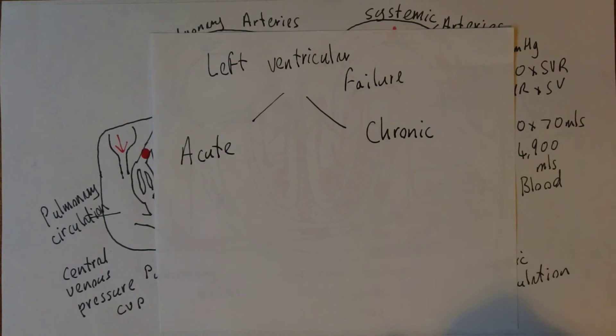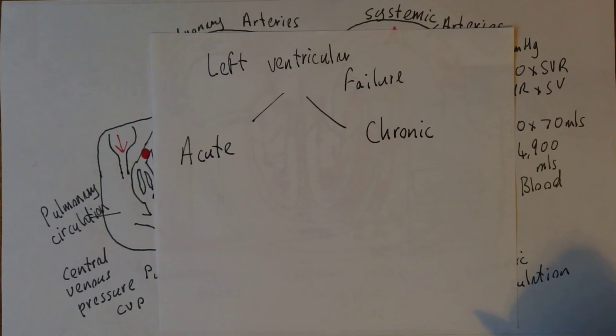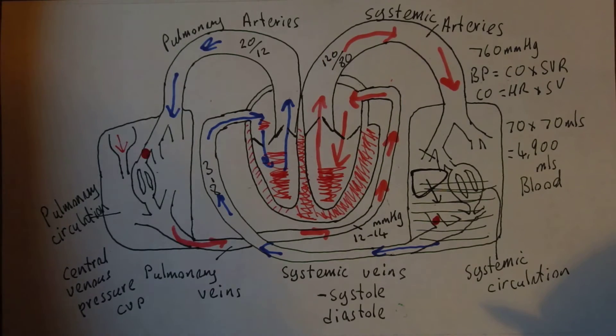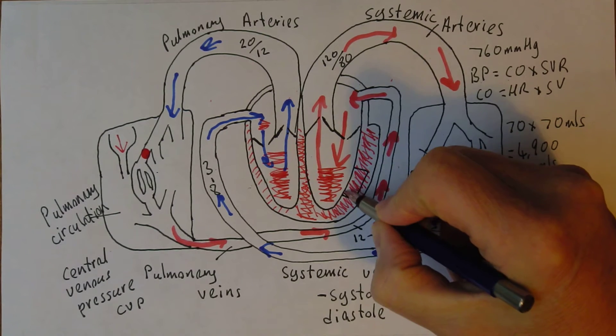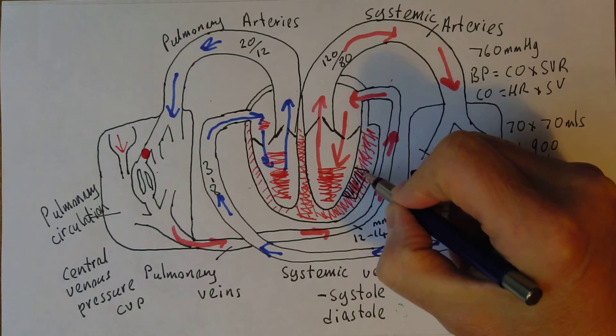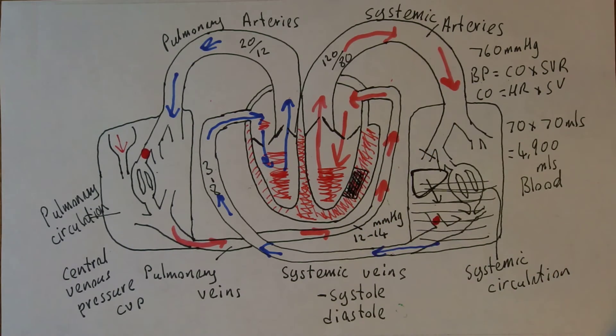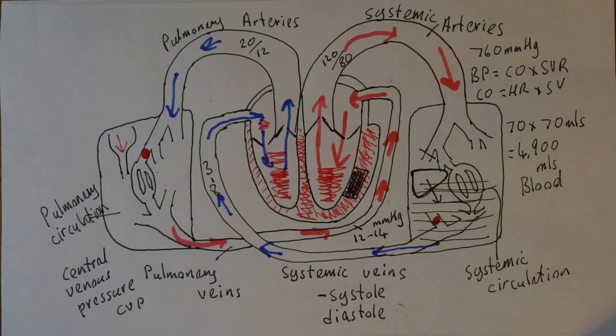Now the acute form can be caused by valvular failure but most cases I've seen of acute left ventricular failure have actually been caused by an acute failure of the left ventricular myocardium, normally caused by an infarction. So if there was an infarction to an area of the myocardium, that area would no longer be contractile unless you rescue it of course. And that can result in reduced left ventricular contractility.